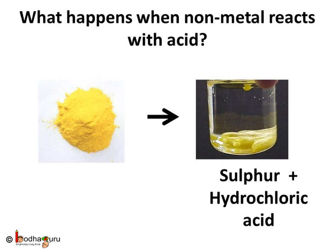Take sulfur powder in a test tube. With the help of a dropper, add 5 ml of dilute hydrochloric acid to the test tube. We see no reaction or change takes place. Next, let's warm the test tube. If we bring a burning matchstick near the mouth of the test tube, nothing will happen. Non-metals generally don't react with acid.